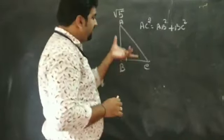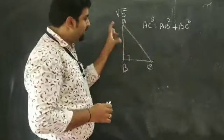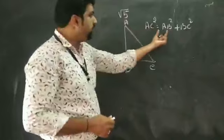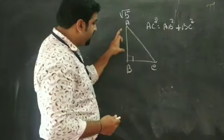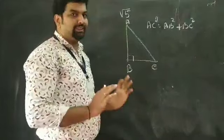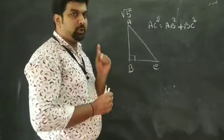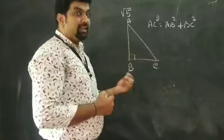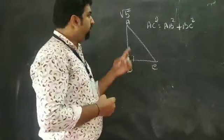The Pythagoras theorem says that the square of the hypotenuse is equal to the sum of the squares of the other two sides, AB square and BC square. So that you need to know first, and then now we will apply this theorem to find out root 5.